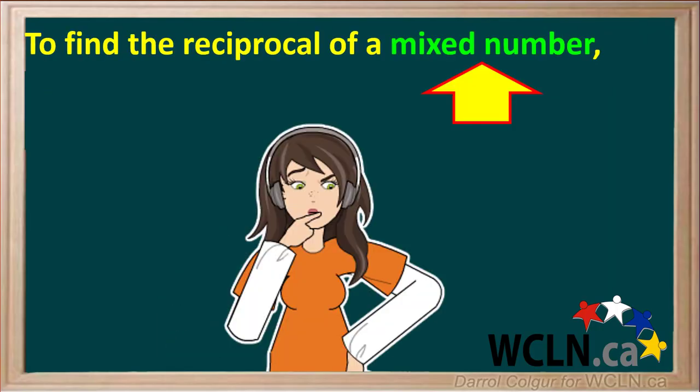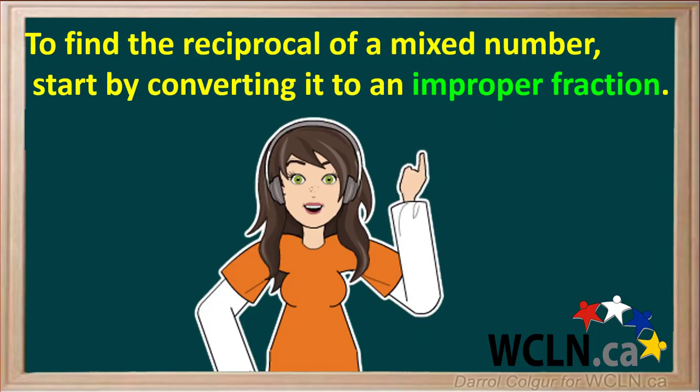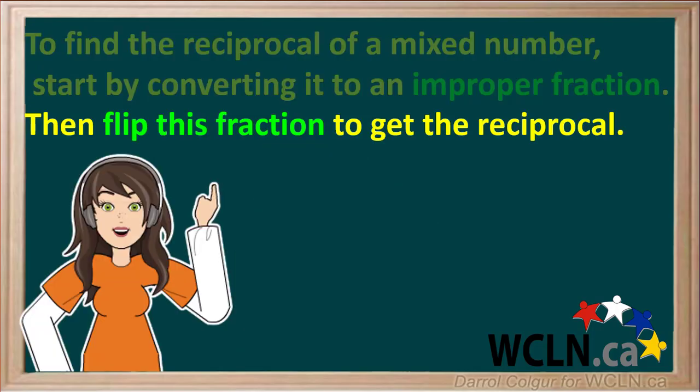Let's say we want to find the reciprocal of a mixed number. We start by converting it to an improper fraction. Then we flip this fraction to get the reciprocal.